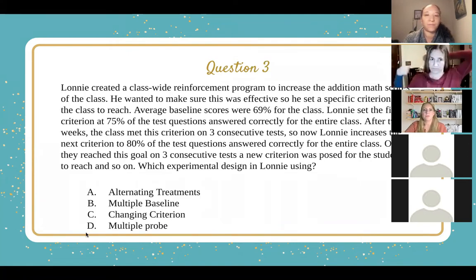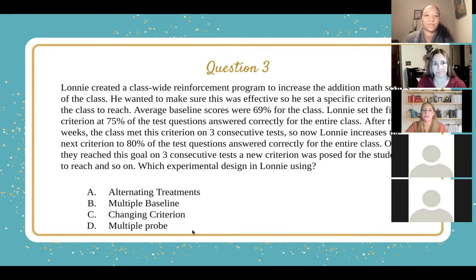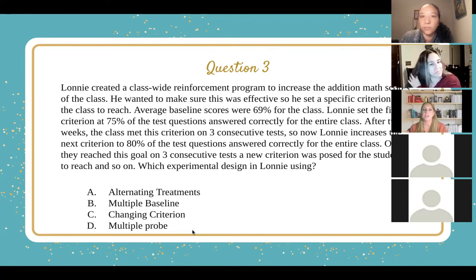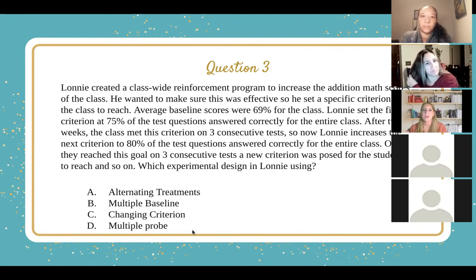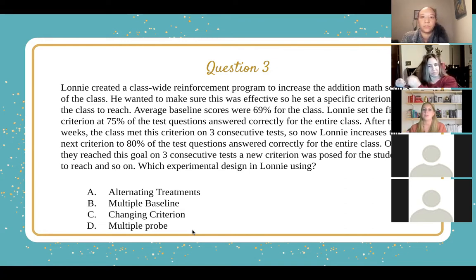And that brings us to question three. Lonnie created a class-wide reinforcement program to increase the addition math scores of the class. Average baseline scores were 69%. Lonnie set the first criterion at 75% answered correctly for the entire class. After two weeks, the class met this criterion on three consecutive tests. Lonnie then increased the next criterion to 80%, and once reached on three consecutive tests, a new criterion was posed, and so on. Which experimental design is Lonnie using?